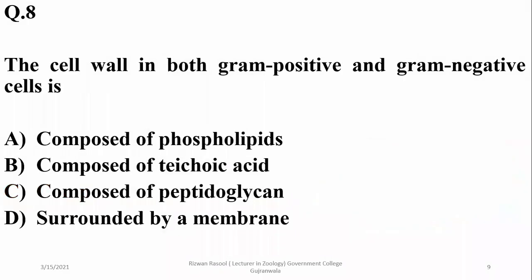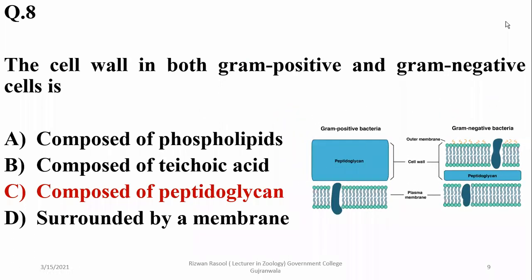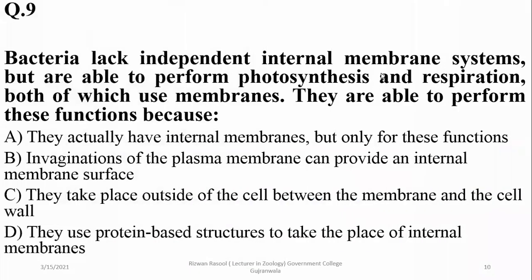The cell wall in both gram positive and gram negative bacteria is composed of peptidoglycan. However, gram positive bacteria have more peptidoglycan in their cells compared to gram negative bacteria. As you can see, peptidoglycan is an essential component in both cases, but gram negative bacteria have less peptidoglycan than gram positive bacteria.